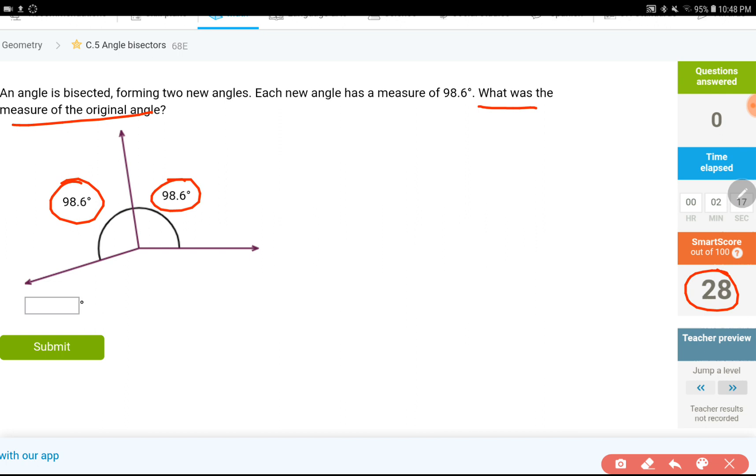Basically, it tells you to add these together, or just multiply one of them by two. 98.6, 98.6. When you add these together, you get 197.2, if I didn't do it wrong. So let's pause the video and then see the next level.